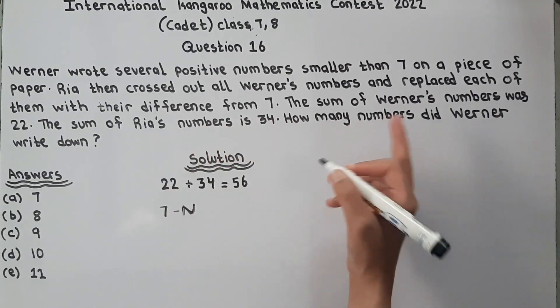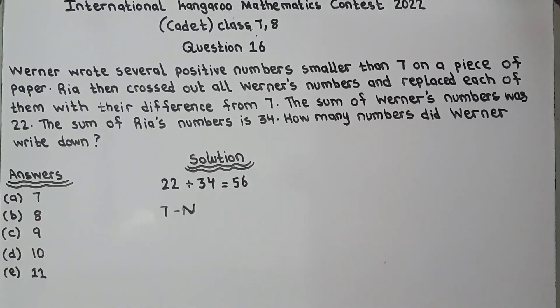because Ria replaced each of them with their difference from 7. That's why we write 7, because Ria replaced them with their difference of 7. Now 7 minus N is 56.